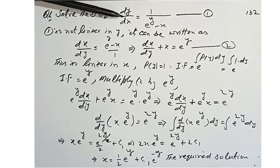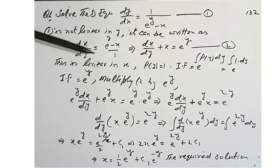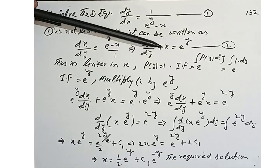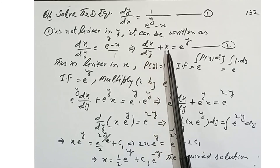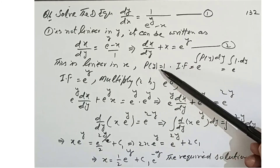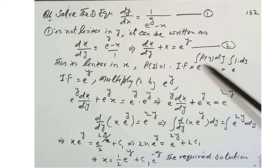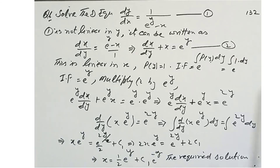Question 6: solve dy/dx = 1/(e^y - x). This is not linear in y. We rewrite it as dx/dy = e^y - x, or dx/dy + x = e^y, which is linear in x. The coefficient of x is 1, so P(y) = 1. The integrating factor is e to the integral of 1 dy = e^y. We multiply equation 2 by e^y.